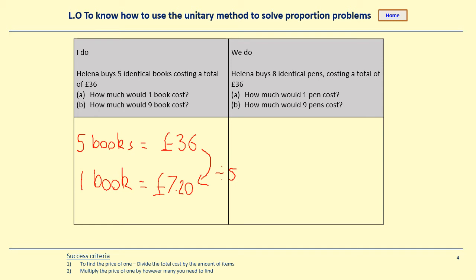Then it asks how much would nine books cost? Well, one book costs £7.20. So nine books — nine times the amount of books — are going to cost nine times the price. So £7.20 × 9 gives me £64.80. Please copy that one down, pause the video, and then try the 'we do' for yourselves.